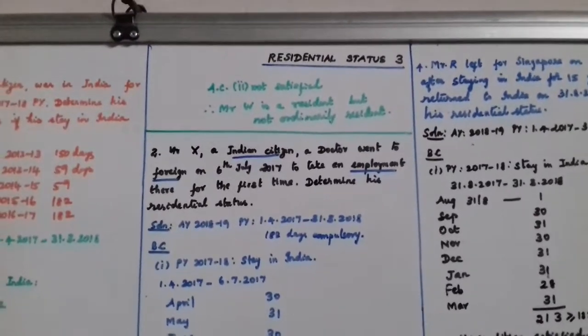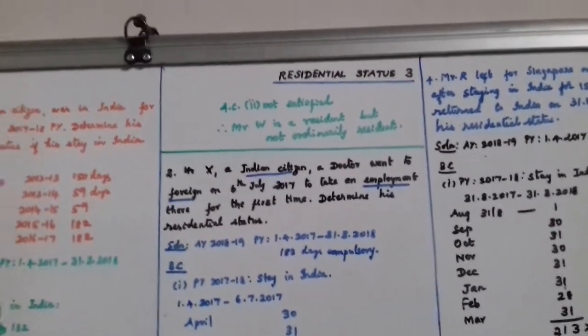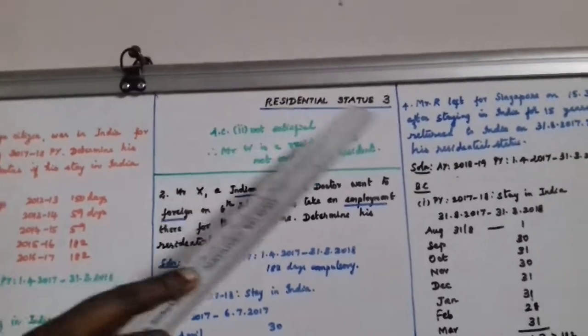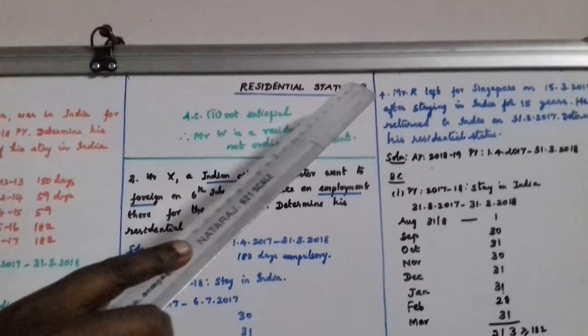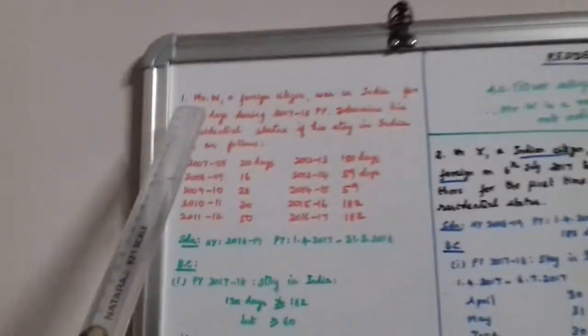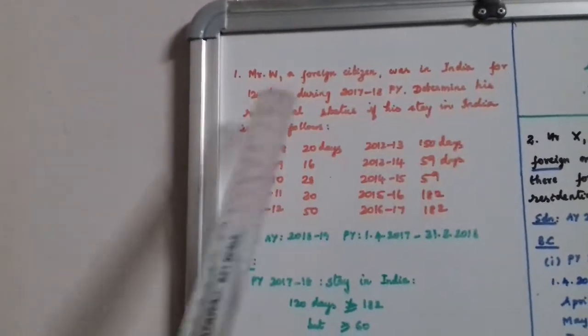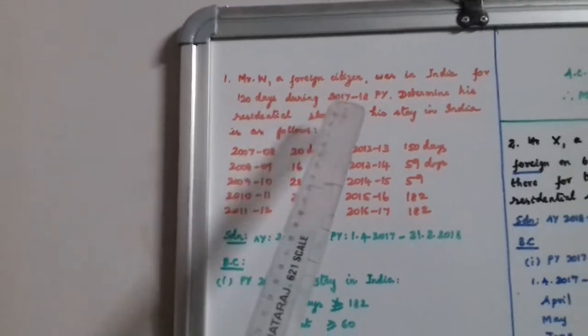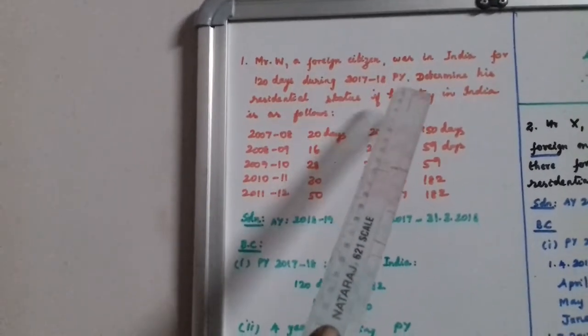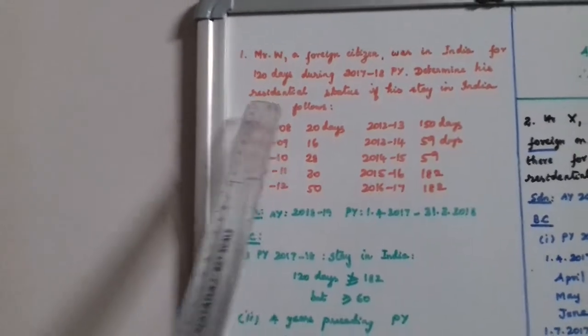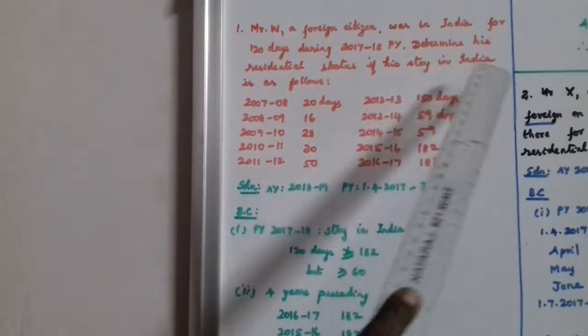Welcome to Periabita channel. Residential status, third video. Mr. W, a foreign citizen, was in India for 120 days during the 2017-18 previous year. Determine his residential status if his stay in India is as follows.